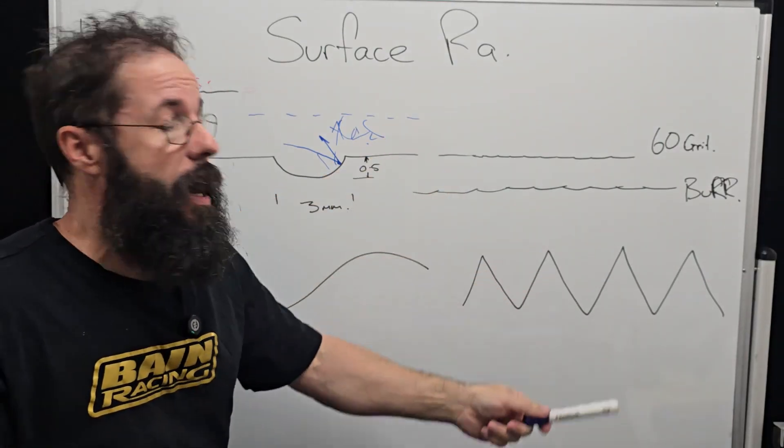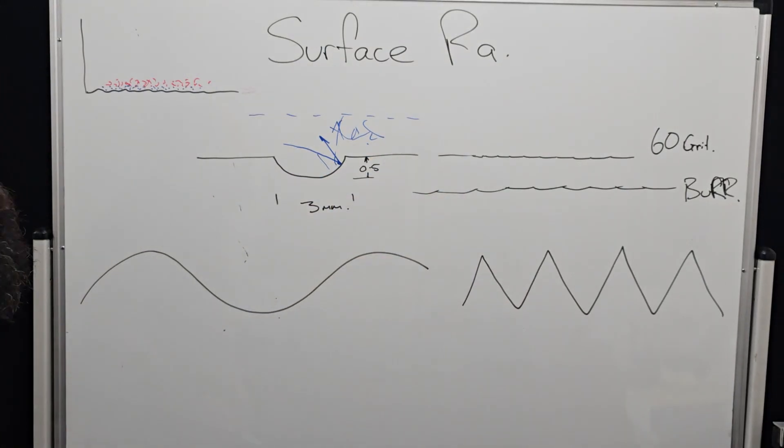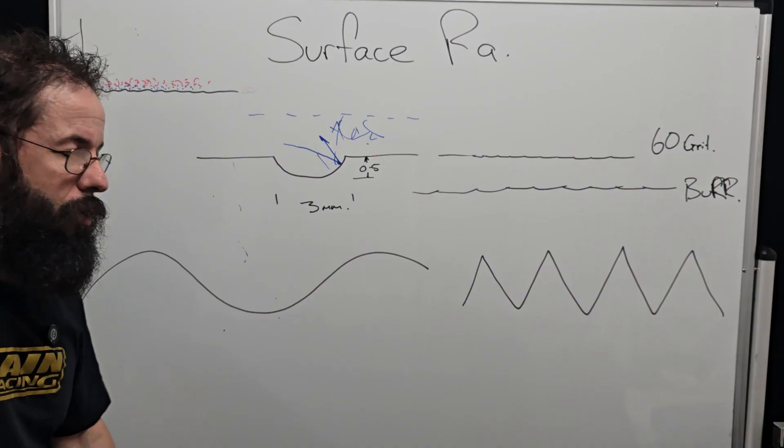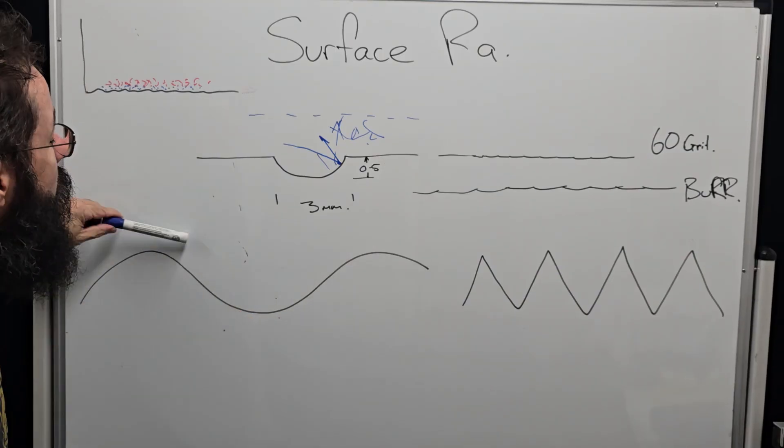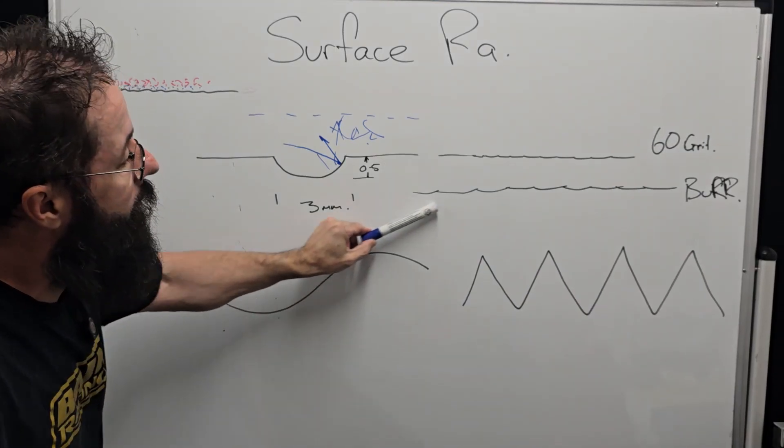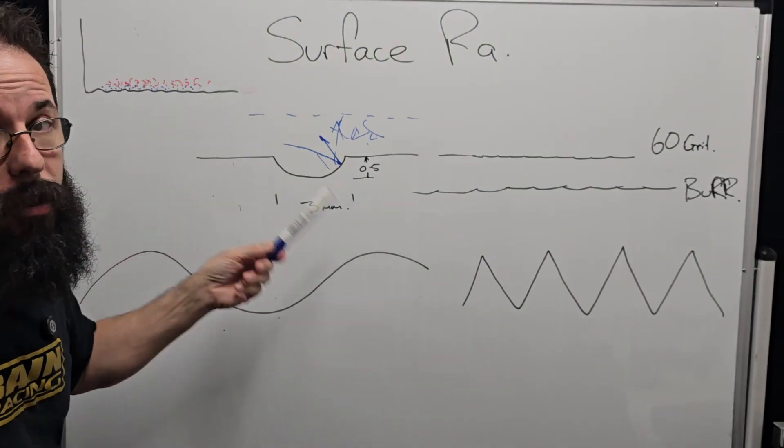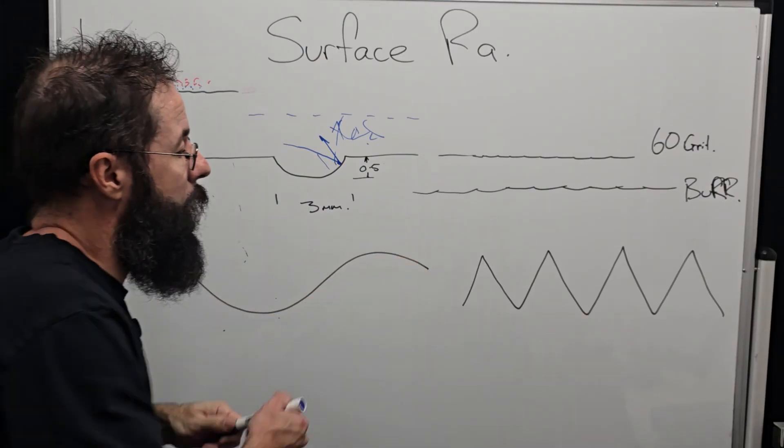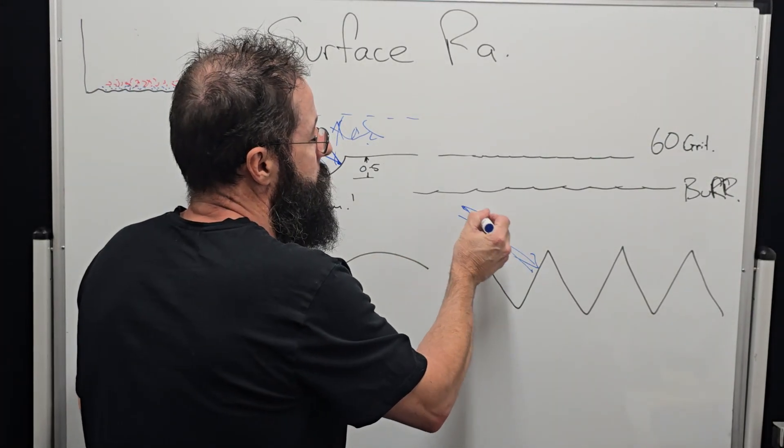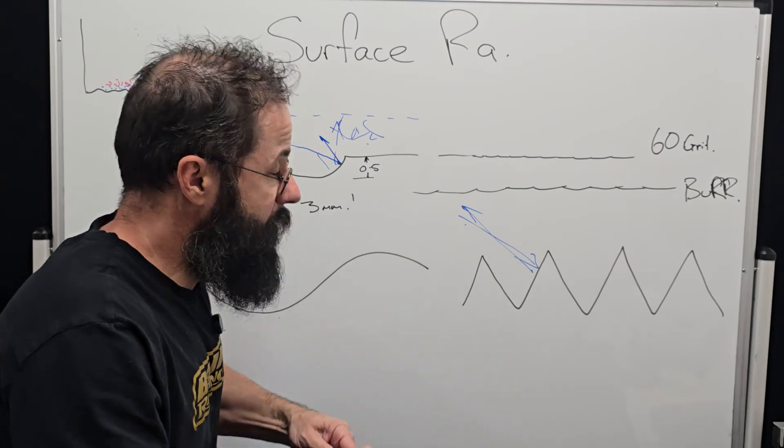Also, you need to look at the profile that the Ra creates. We can have two of the same Ra profiles. Which one do you think is going to have less drag coefficient? Obviously this one, because the molecules coming in are going to tend to bounce in the flow direction, where molecules that are going to interact here are going to come straight back into the airstream.